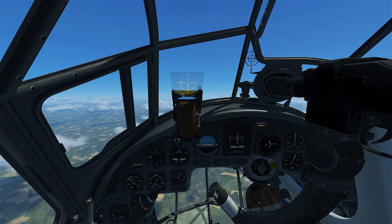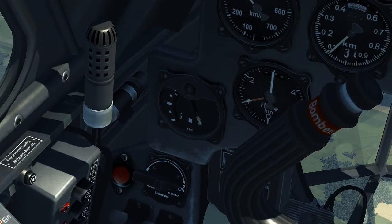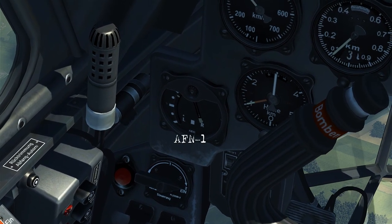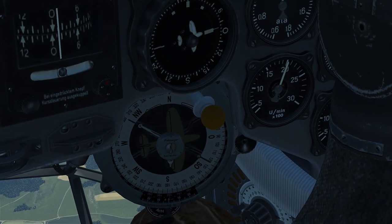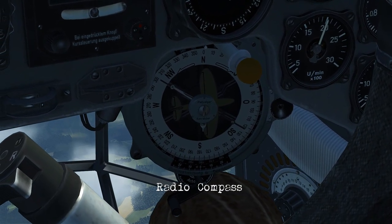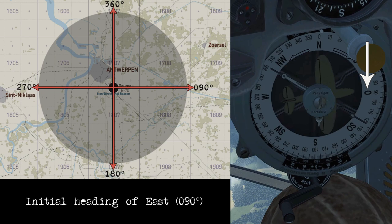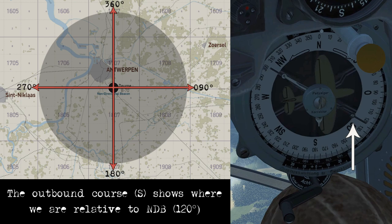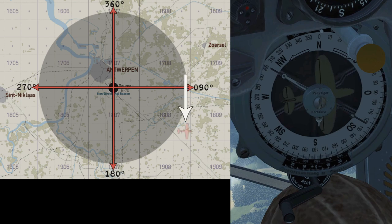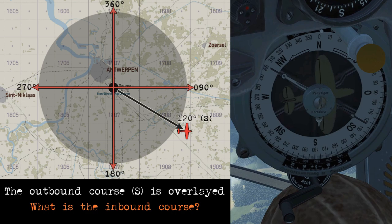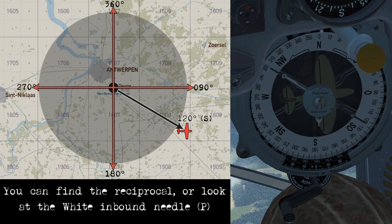Now we'll go in-game and have a look at how to use these with some examples. On the JU-88, with the AFN-1 down in the bottom left and the radio compass on the right, we'll take a quick look and then pause to go to the map screen. Looking at the radio compass, we can see that we're on a heading of east. Looking at the outbound needle, we are outbound from the station on a course of 120, putting us in the southeast corner. If we overlay the outbound course, we can calculate the reciprocal to find our inbound course.